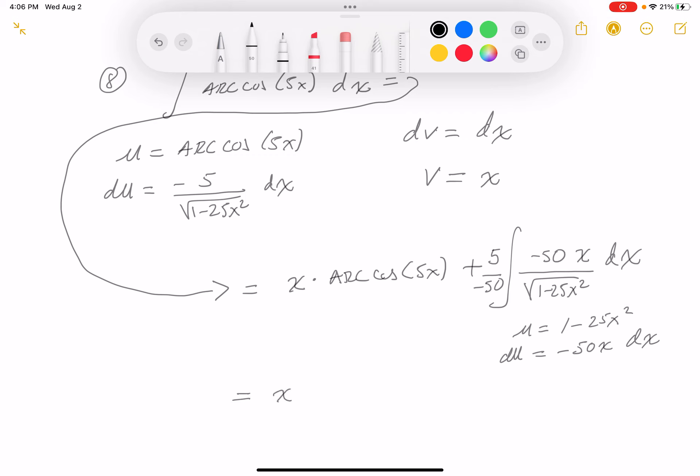You get x arc cosine of 5x minus, this is 1 tenth now. I'm going to use a star because I'm going to change the variable to a u. So minus 50x dx is going to be just 1 du. And then the bottom, what do you get? You would get u to the 1 half power.